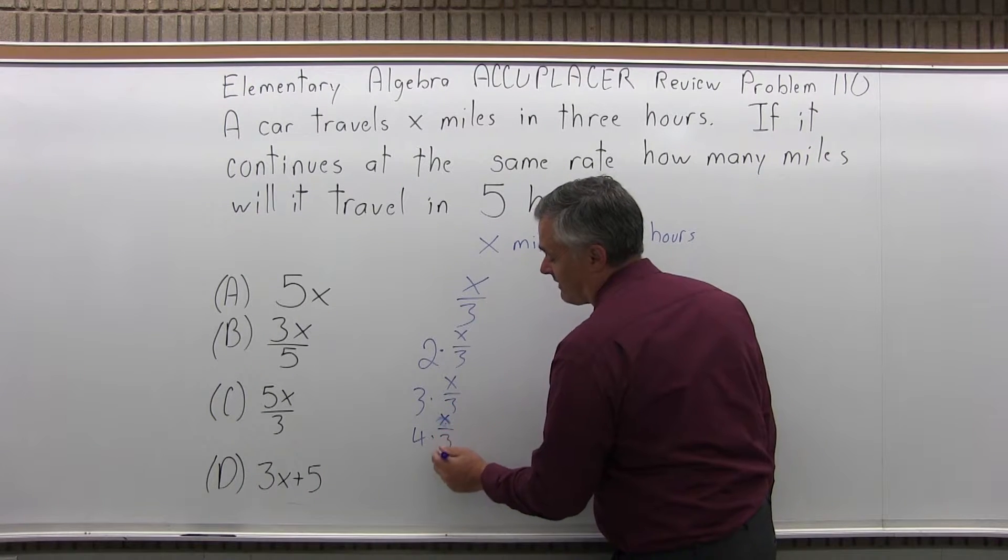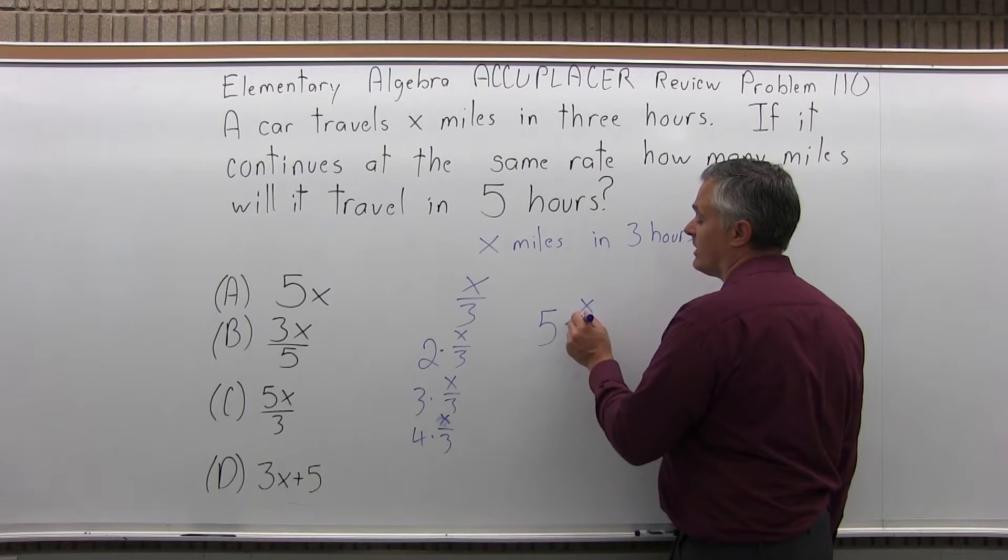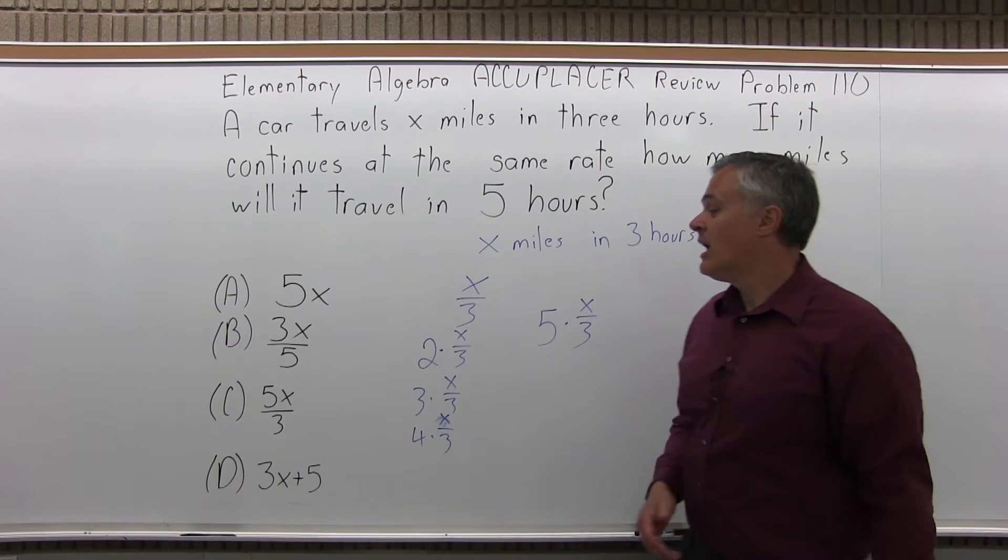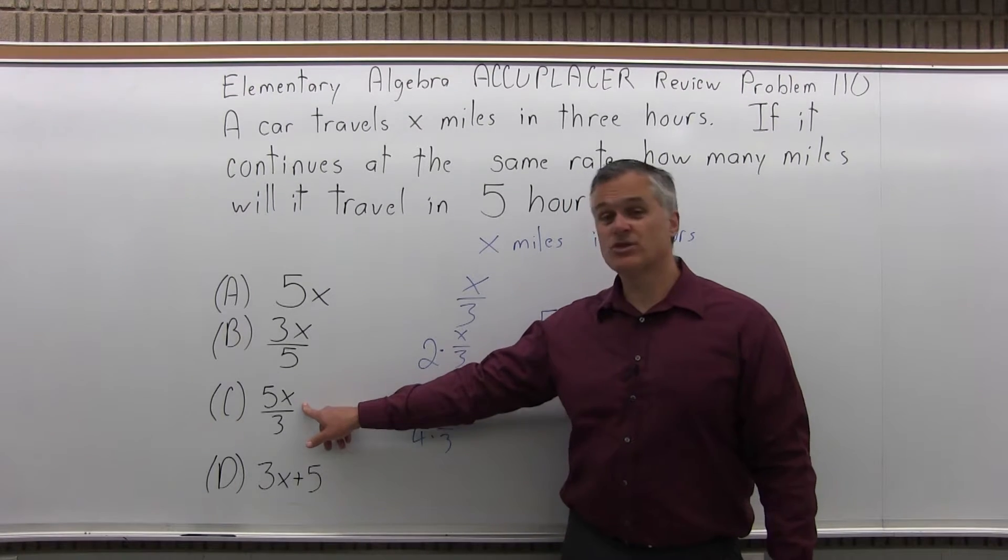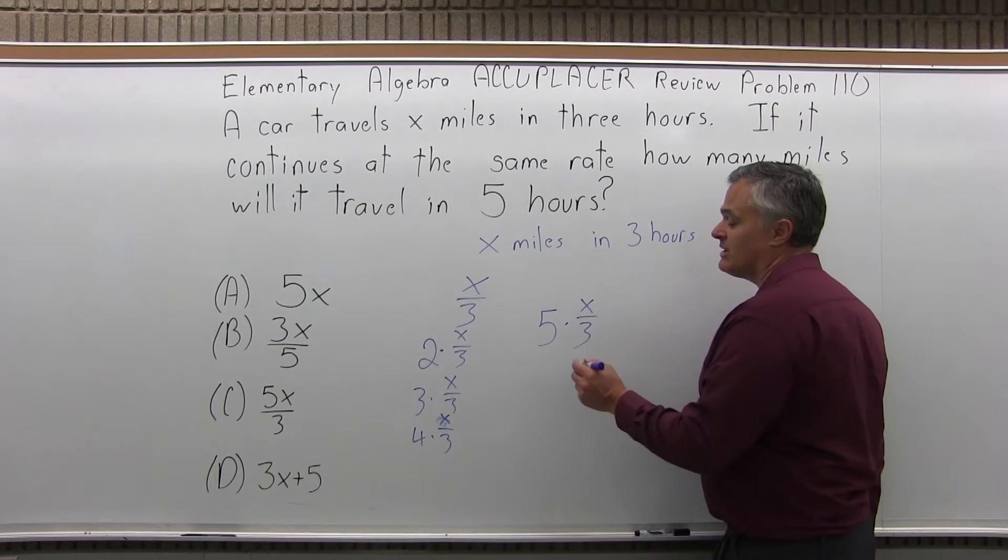And in five hours you would go five hours times the miles per hour rate of X over three. So I have five times X over three. I have an option that looks close, five X over three. Is that the same as five times X over three? It is.